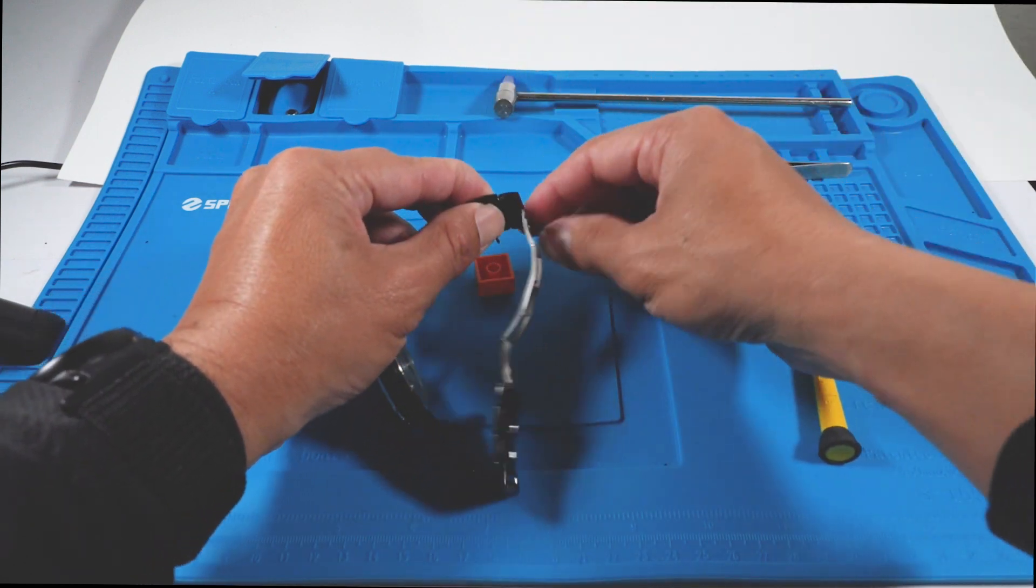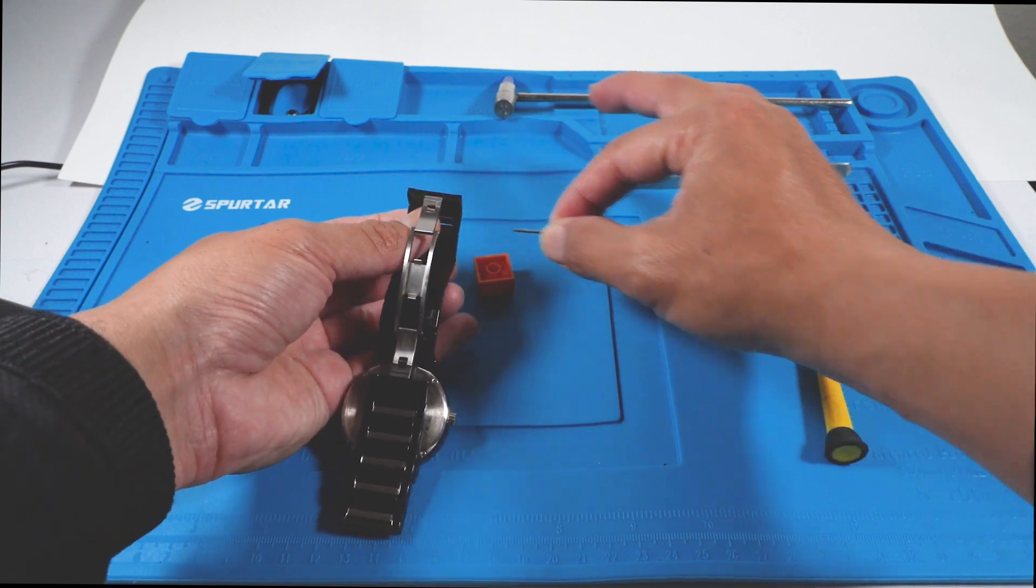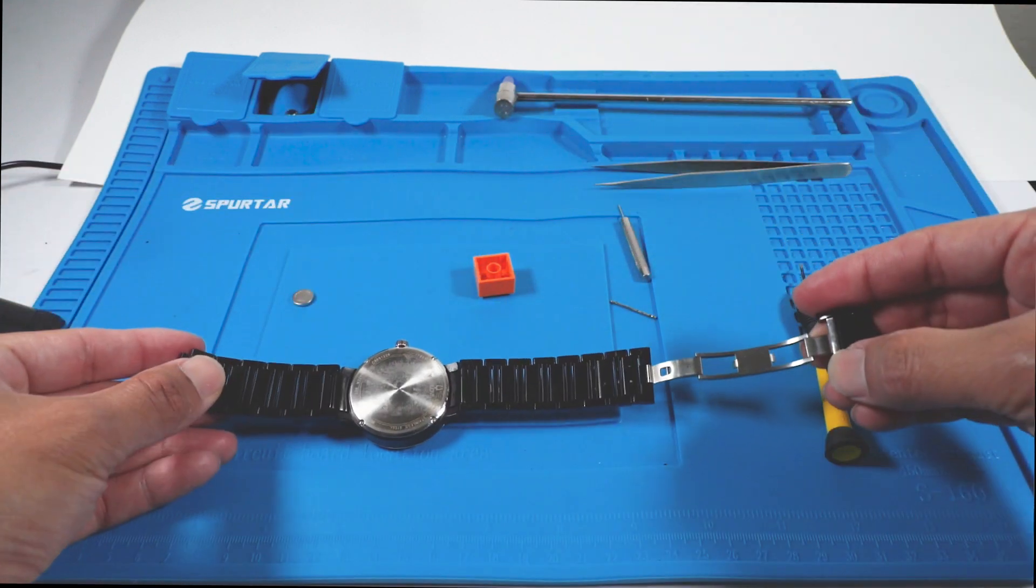The pin should come up the bottom or at least protrude far enough for you to be able to yank it out with your fingers.